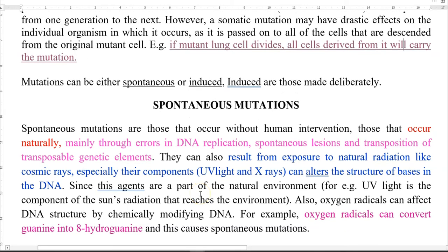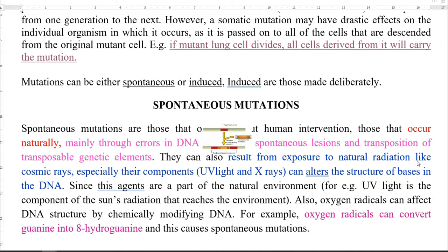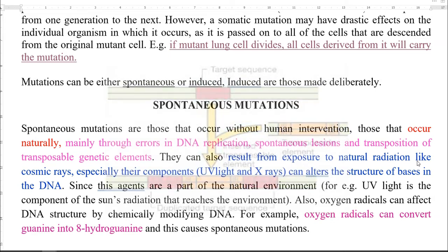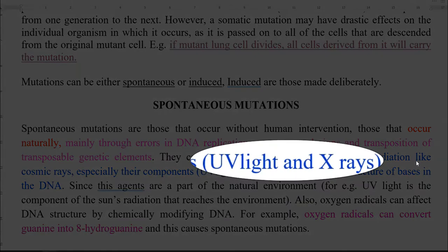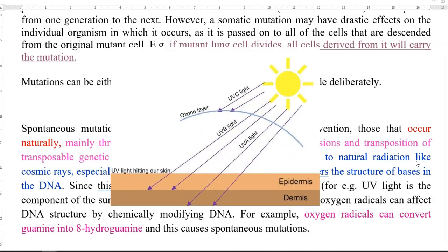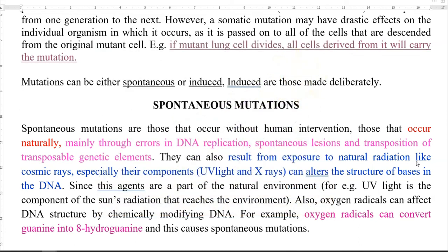First, we look at spontaneous mutations. These mutations occur without human intervention — that is, they occur naturally. They can occur through errors in DNA replication, spontaneous lesions, and transposition caused by transposable genetic elements inserting into the genome. Sometimes spontaneous mutations could result from exposure to natural radiations like cosmic rays, especially UV light and X-rays, which can alter the structure of bases in nucleotides. Since these agents are part of the natural environment — for example, sunlight contains a lot of UV — exposure to sunlight can automatically result in UV-induced mutations.